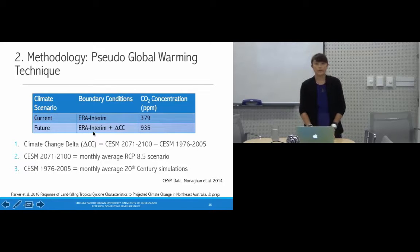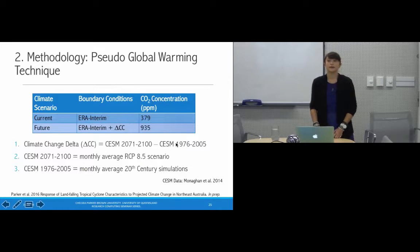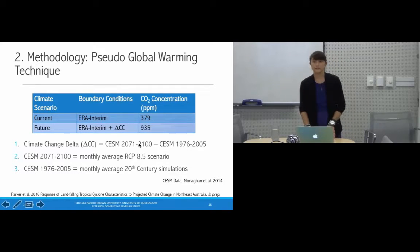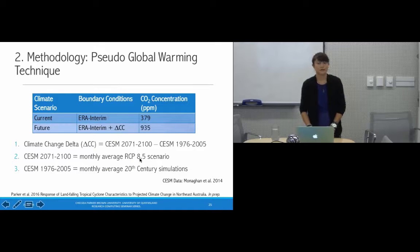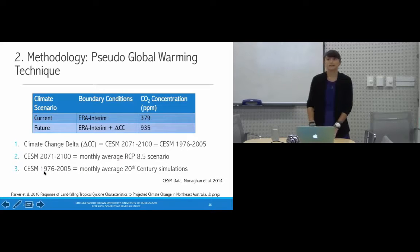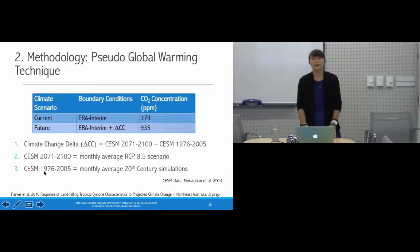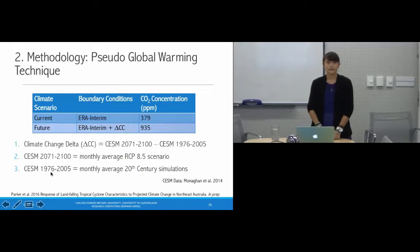The climate change delta is calculated by subtracting the current climate simulated by the Community Earth System Model from its future climate simulation. The future climate is defined as the monthly average of 30 years of CESM data under the RCP 8.5 scenario, and the current climate as the monthly average of CESM's 20th-century simulation from 1976 to 2005. We take 30-year averages to remove signals of decadal variability.